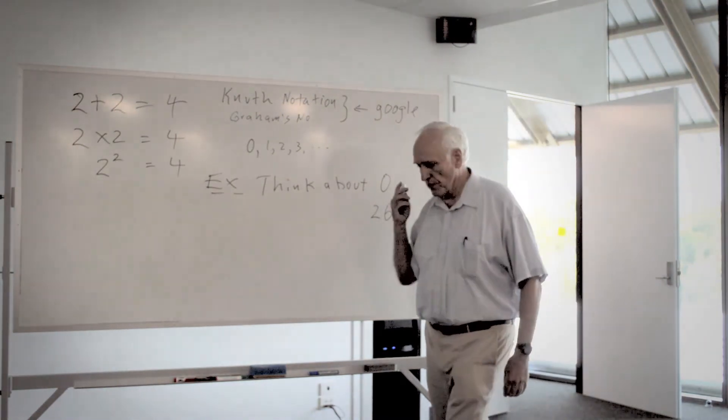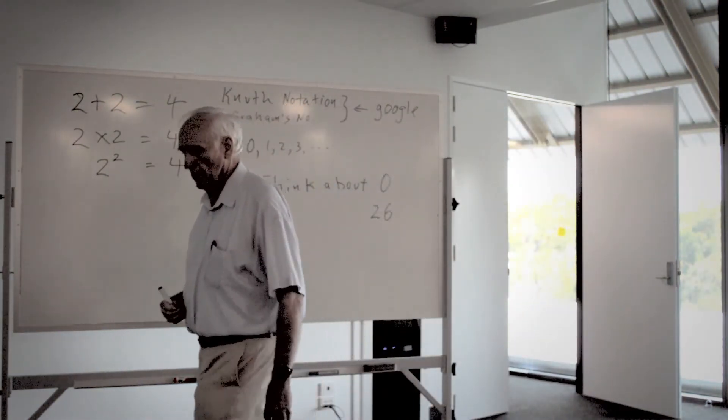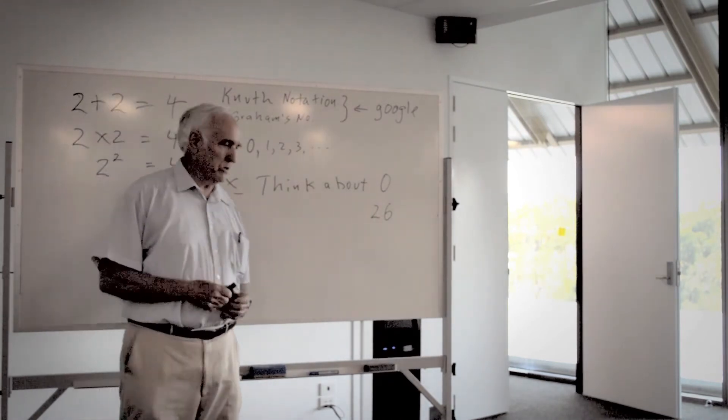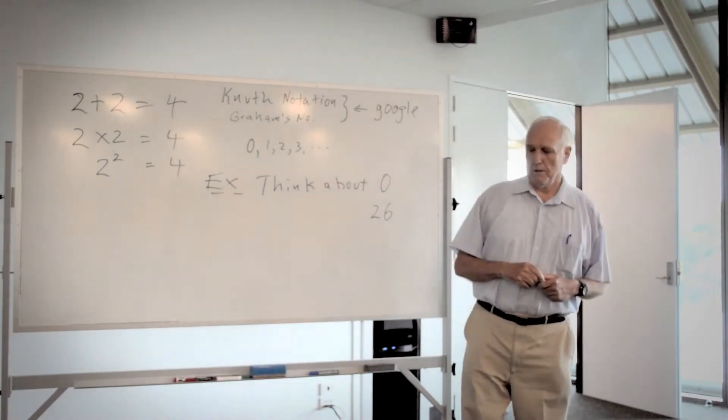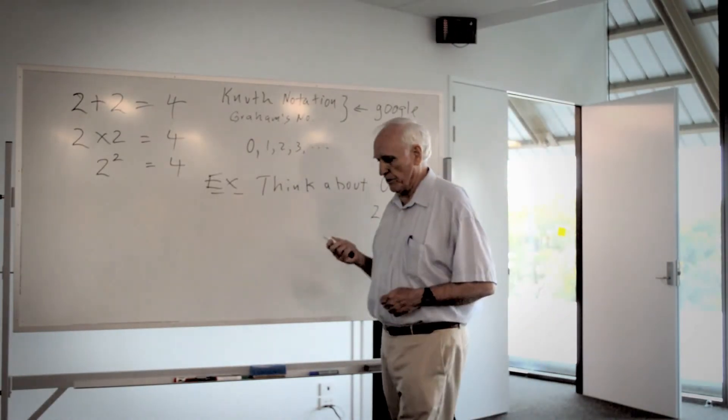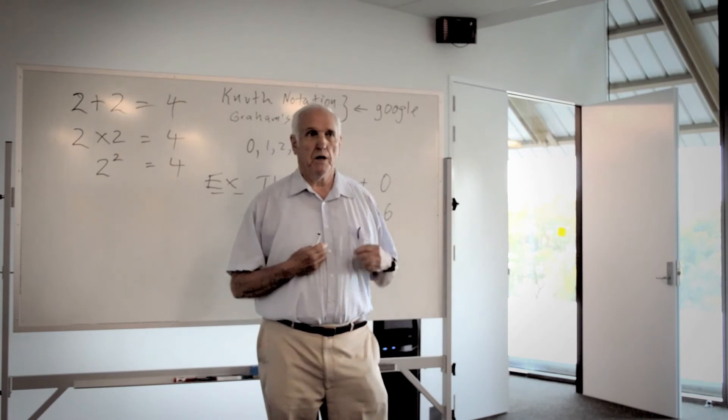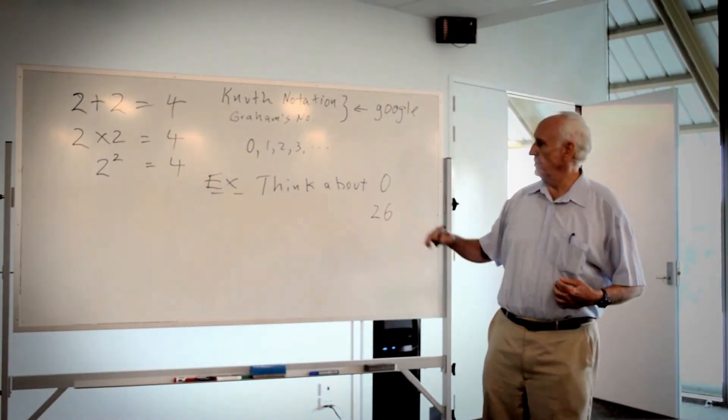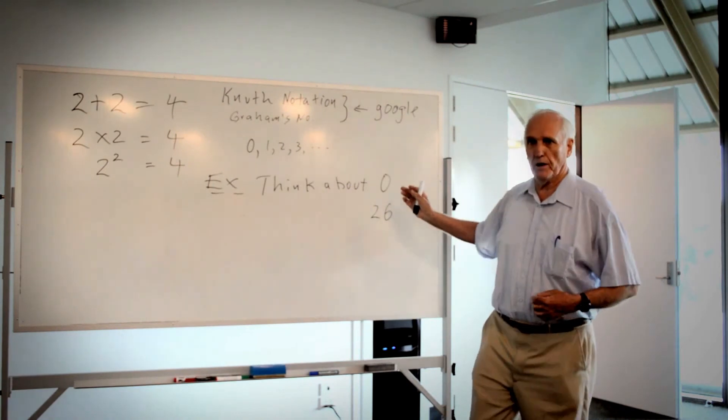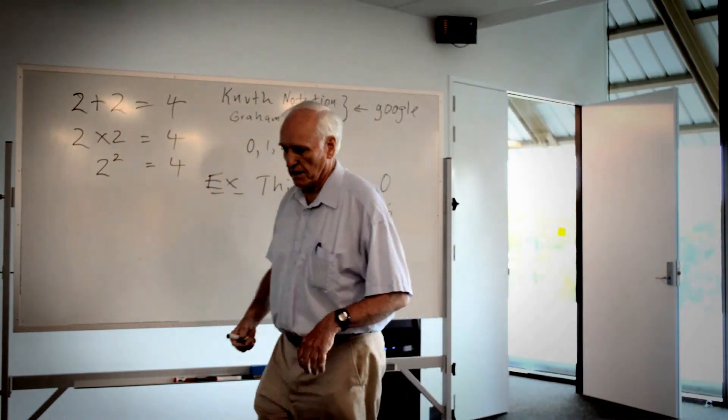Those are the only two numbers that are sandwiched between a perfect square and a perfect cube. There's no other numbers. 26 is sandwiched between 25 and 27, and naught is sandwiched between minus 1 and 1. That's the only one. So they share that in common. So think about 26 as a much nicer thing to think about.